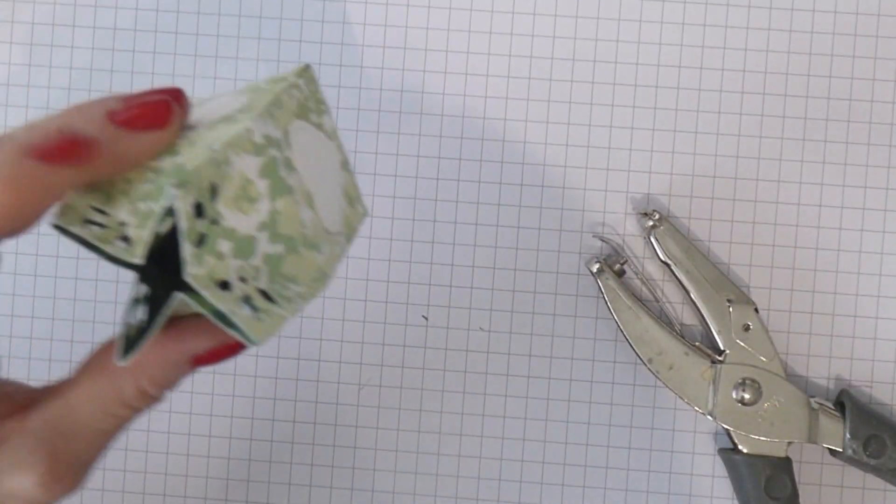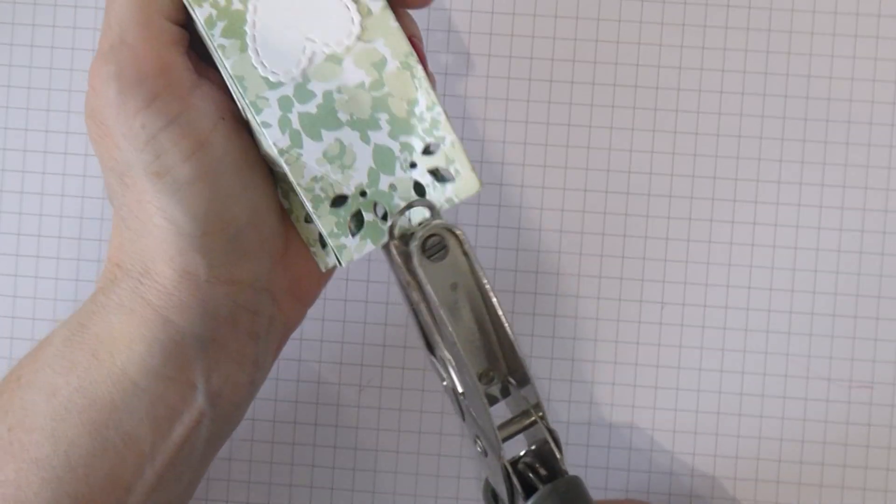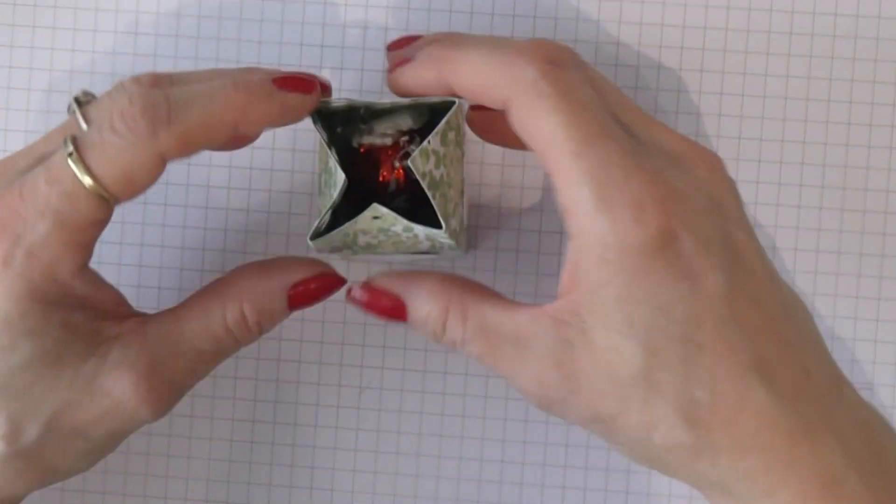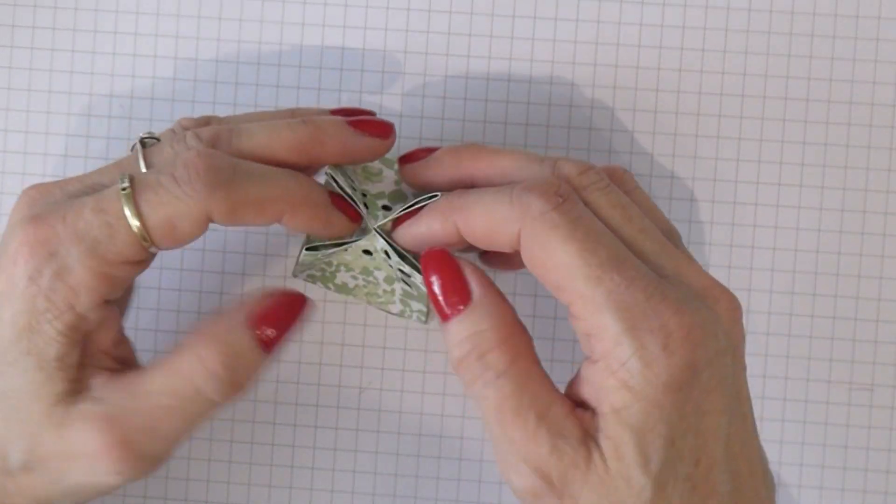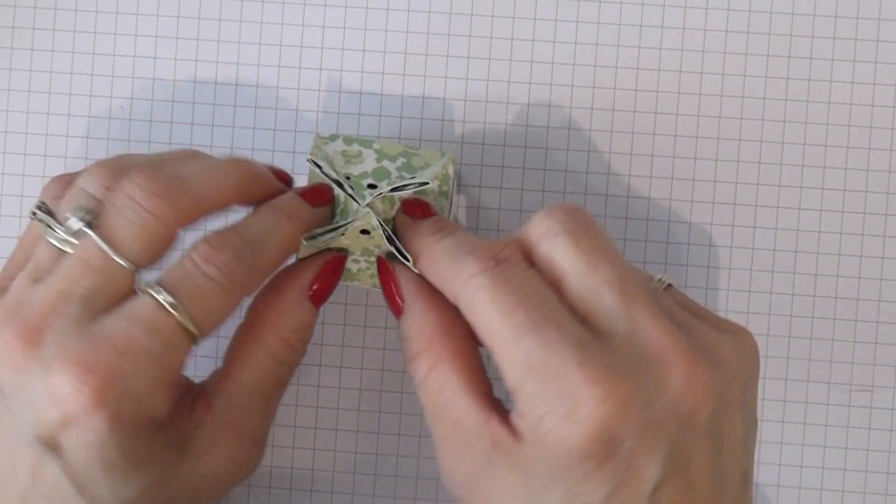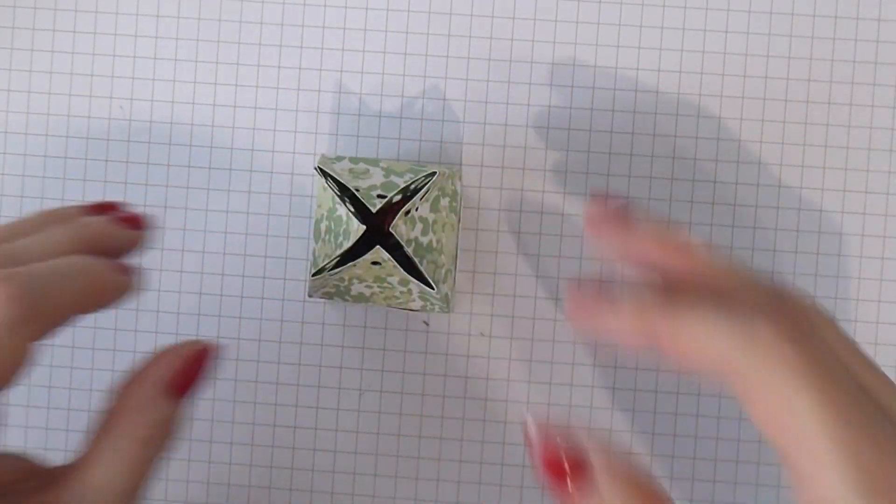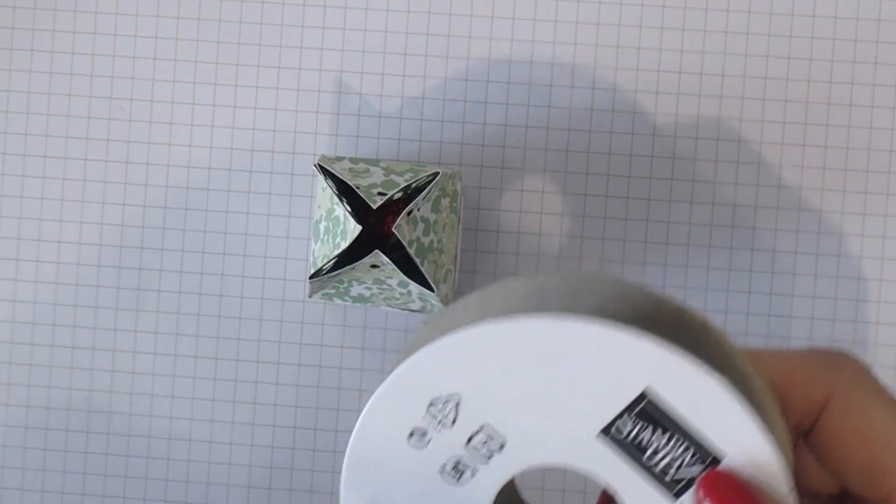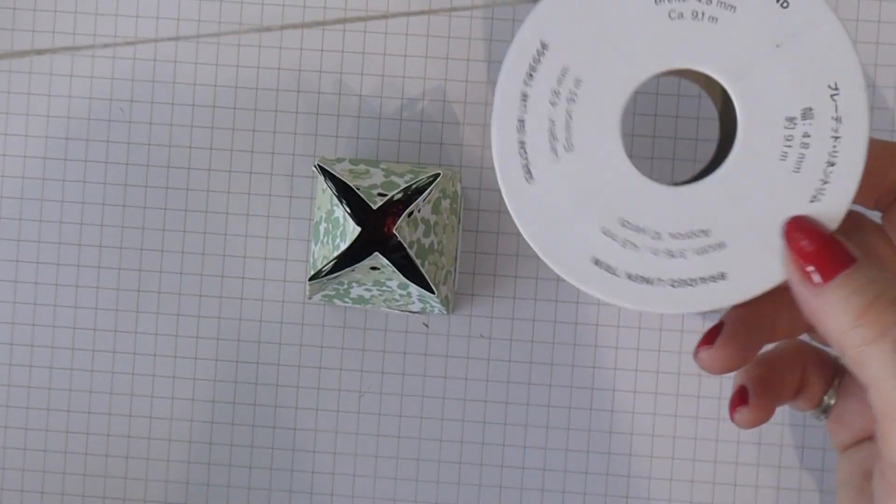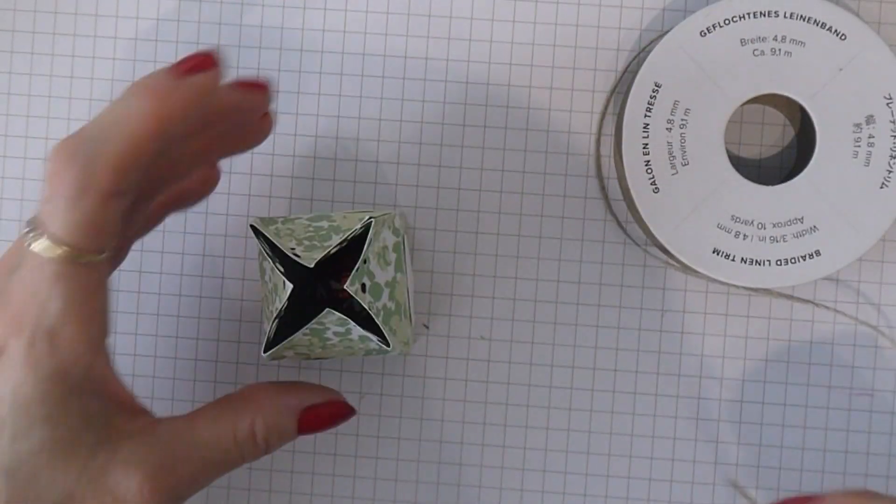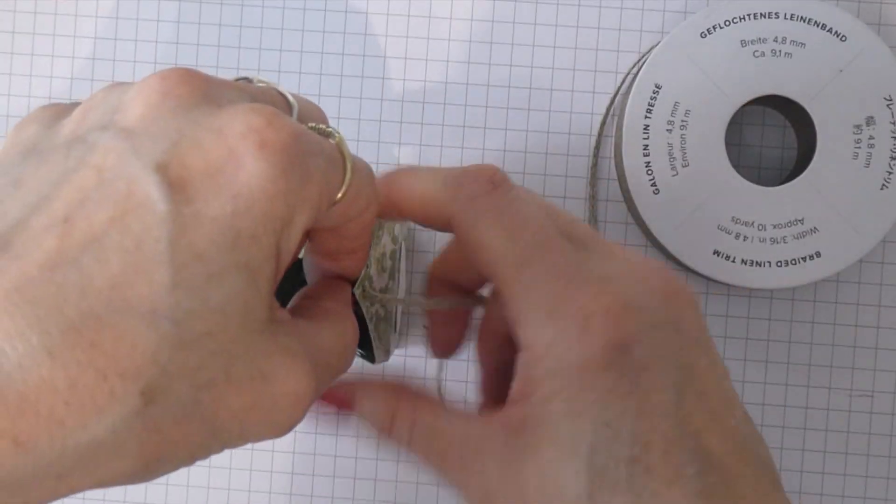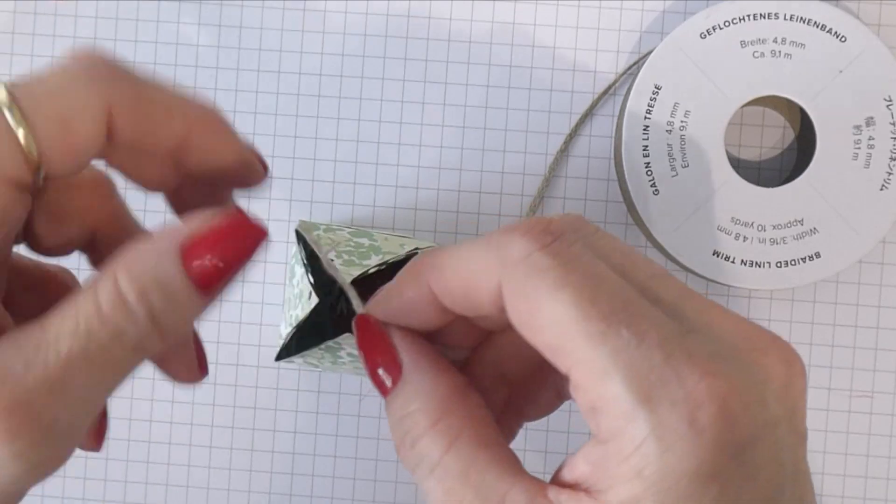Now you can see you've got this really pretty sort of faceted lid going on and I'm just going to put some ribbon through here. This one is the Braided Linen Trim and I just think it's really pretty, perfect for this project as well. It's about an eighth of an inch wide, just going to feed myself some through.